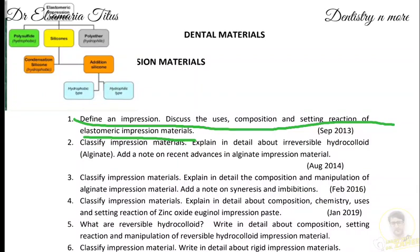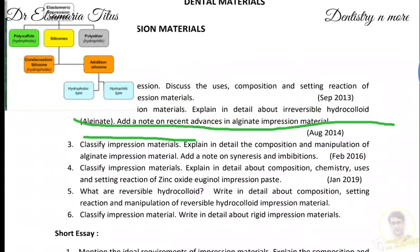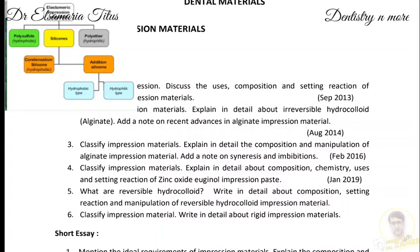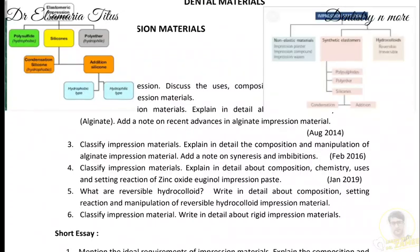Coming to the definition of an impression: dental impressions are negative impressions of teeth and oral cavity. Regarding the uses of elastomeric impression materials: they are used in fixed partial dentures for impressions of prepared teeth, for impressions of dentulous mouths for removable partial dentures, for impressions of edentulous mouths for complete dentures. Polyether is used for border molding of edentulous custom trays and for bite registration. Silicone duplicating material is used for making refractory casts during cast partial denture construction.